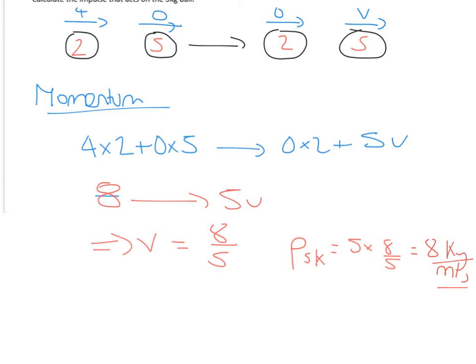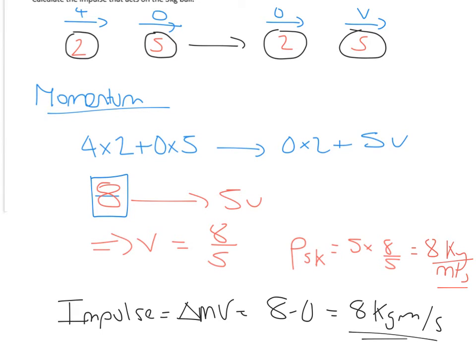So you'll notice, actually, we could have stopped at this stage here, because this would be the final momentum. So remember, impulse is the change in momentum. So that's going to be 8 minus 0, because it started off stationary. So that's 8 kilogram meters per second. Here's the impulse that acts on the object.